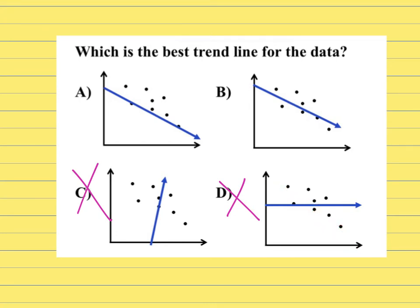Now my choice is between A and B. A has the line touching two points, however, it's not equally spaced and there's no dots down here.